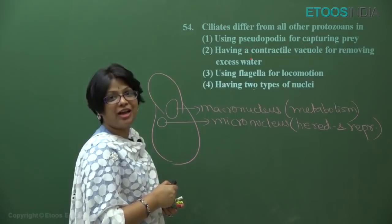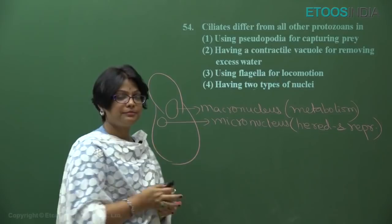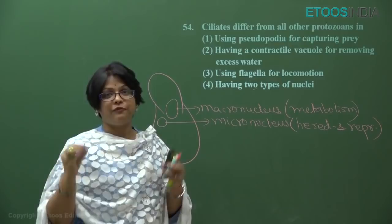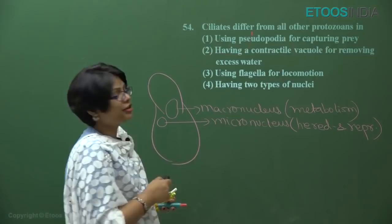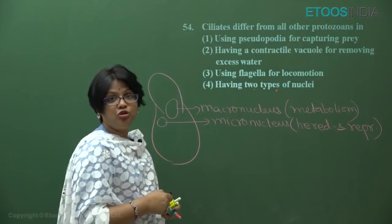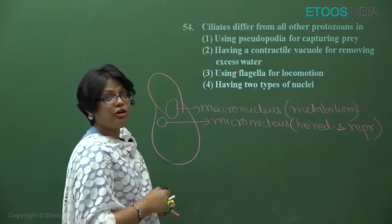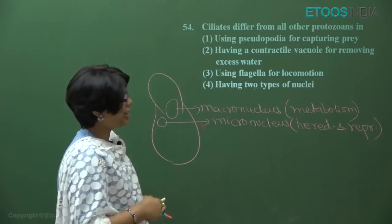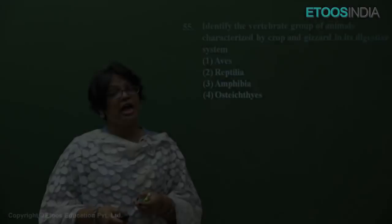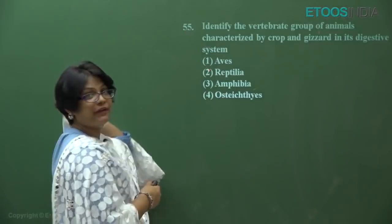Pseudopodia are not found in ciliates — they are found in the amoeboid class. Contractile vacuoles are present in all freshwater protozoa, so it is not a unique character of ciliates. Using flagella for locomotion is a character of flagellated protozoans. Having two types of nuclei — the dimorphic nucleus condition — is the unique answer. Answer is four.